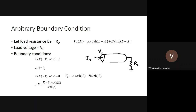At X = 0, plugging in gives V_0 = A·cosh(L) + B·sinh(L). Solving for B gives B = (V_0 − V_L·cosh(L)) / sinh(L). In this process we are expressing the solution coefficients A and B in terms of V_0 and V_L.